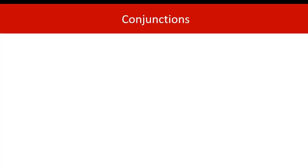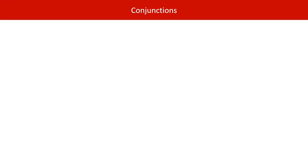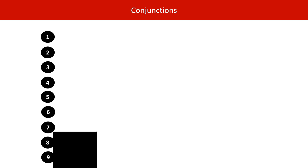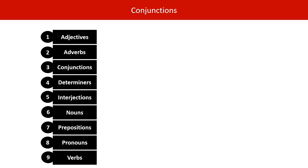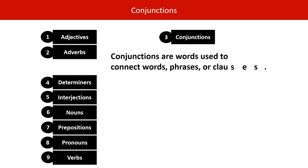In this video we're going to look at conjunctions. Conjunctions are one of the nine parts of speech. Here's a definition: conjunctions are words used to connect words, phrases or clauses. Here are three common conjunctions: and, or, and but.